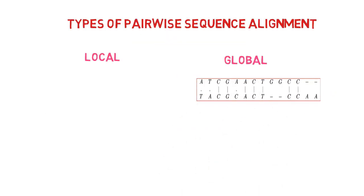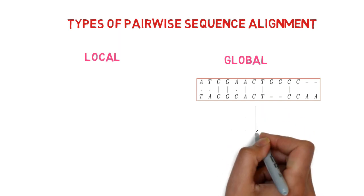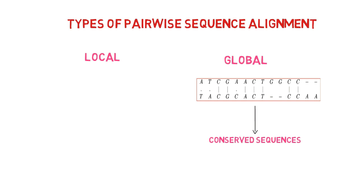By introducing gaps, global alignment increases the number of sequence matches along the entire length of two sequences. It is used to identify conserved sequences.